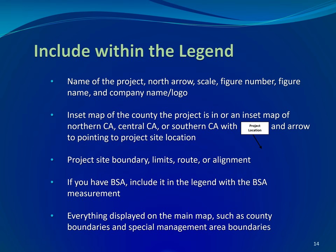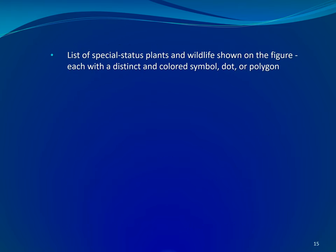Include within the legend the name of the project, north arrow, scale, figure number, figure name, and the company name or logo. Include an inset map of the county the project is in, or an inset map of northern, central, or southern California with a project location text box and arrow pointing to the project site. Include the project site boundary, limits, route, or alignment, and if you have a BSA, include it in the legend with the BSA measurement. Include everything displayed on the main map such as county boundaries and special management area boundaries. Finally, include the list of special status plants and wildlife shown on the figure, each with a distinct colored symbol, dot, or polygon.